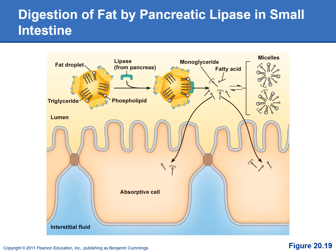The bile acids attach to the fat droplets after we've emulsified the larger fat globule into smaller droplets. The pancreatic lipases can then attach to the outside of the fat droplets and break down the triglycerides into monoglycerides and fatty acids. Some of these monoglycerides and fatty acids diffuse right into the small intestinal cell. The ones that are not absorbed huddle together to form micelles, and as the micelles travel down the intestine, each time they get close to the wall, some will diffuse into the intestinal cell and get absorbed.